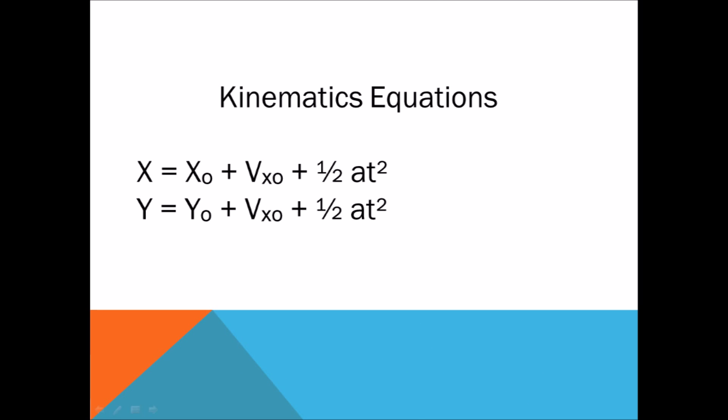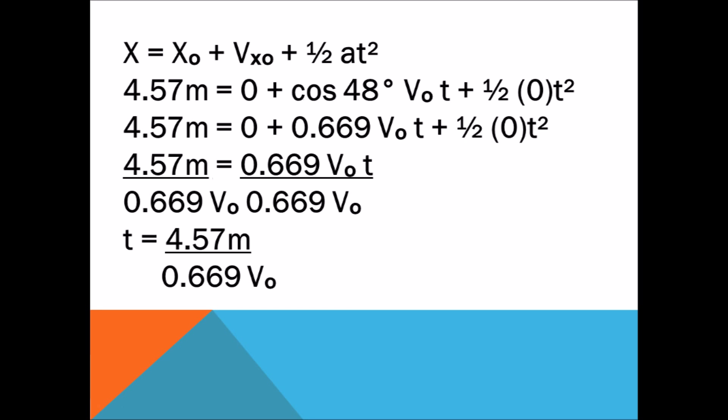These are the kinematics equations we're going to use to solve for time and initial velocity. Using the horizontal equation x equals x₀ plus v₀ₓ times t plus one-half at², since initial position is zero and there's no acceleration in the x direction, we get 4.57 meters equals 0.669 v₀ times t. Isolating time gives us t equals 4.57 meters divided by 0.669 v₀.